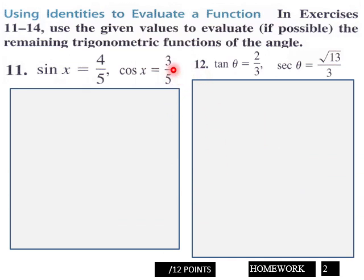Page 2 of your homework: use the given values to evaluate the remaining trigonometric functions of the angle. You've got sine and cosine given. Put the remaining functions here with exact values for each of these functions. Page 2 is 12 points.